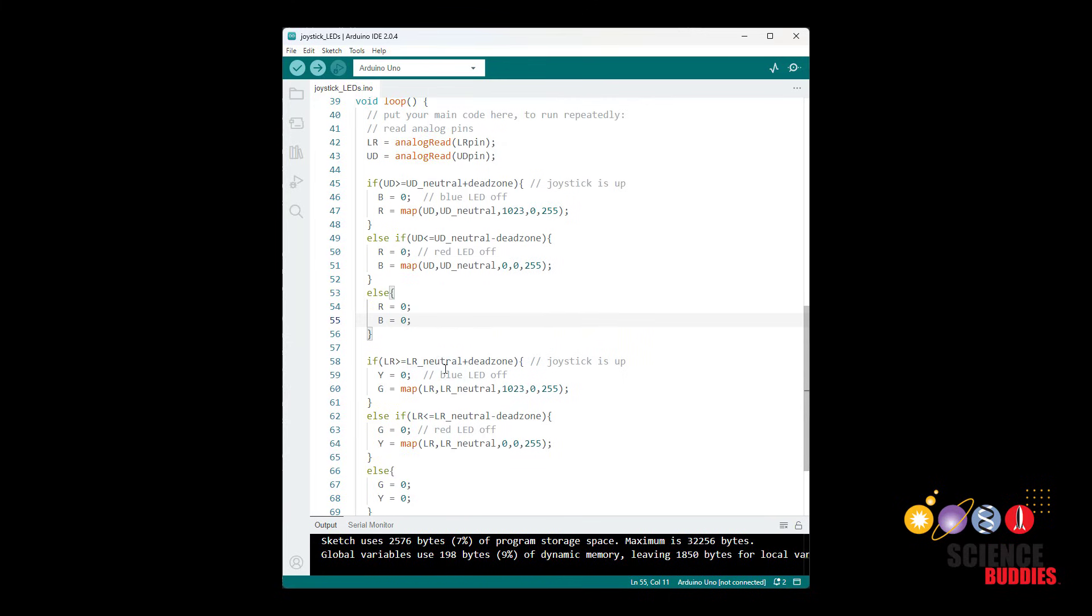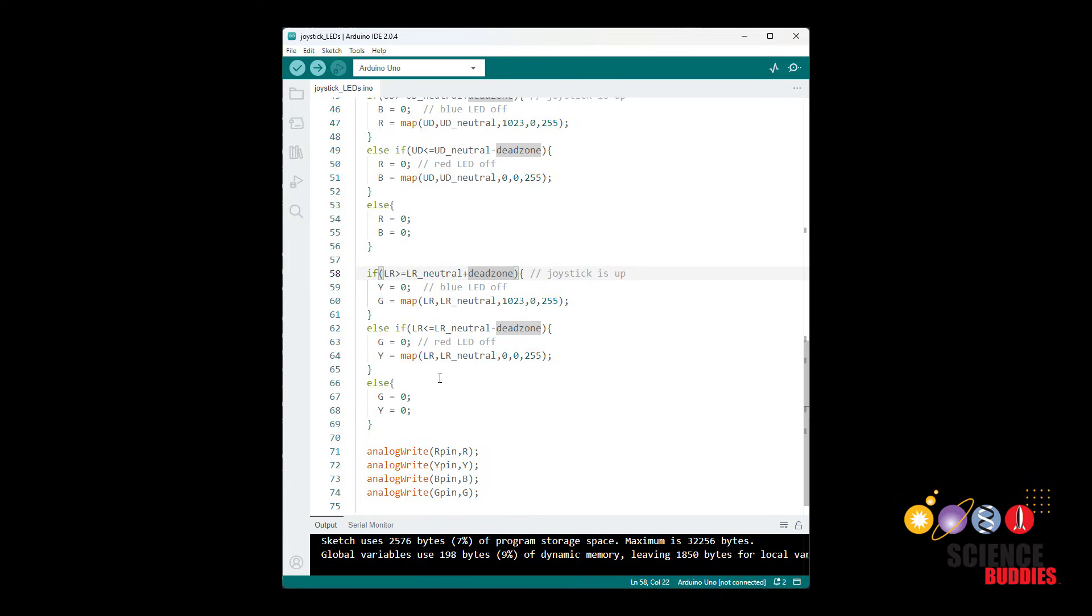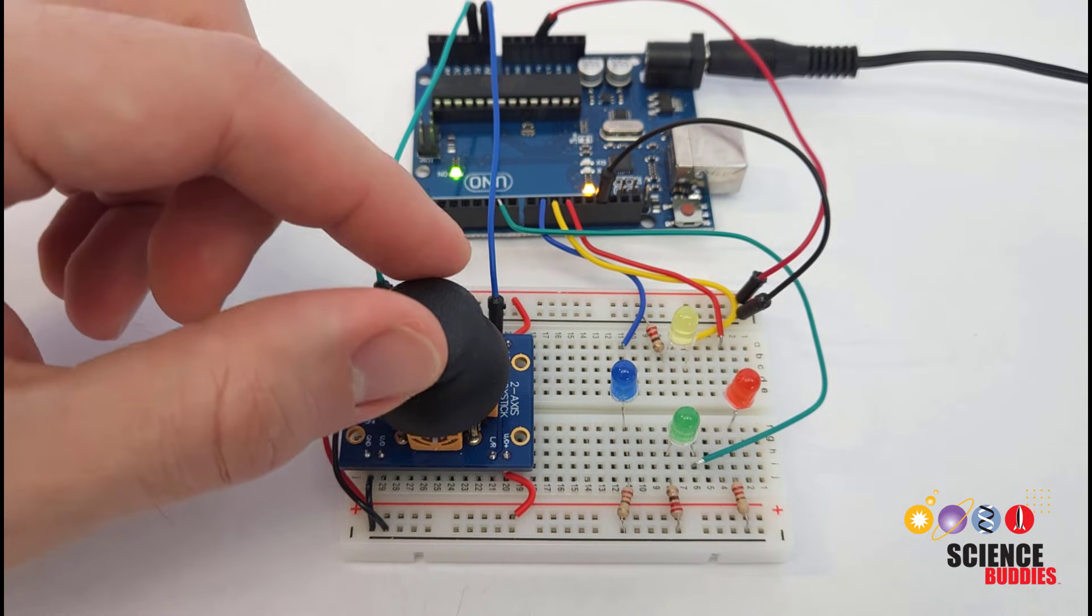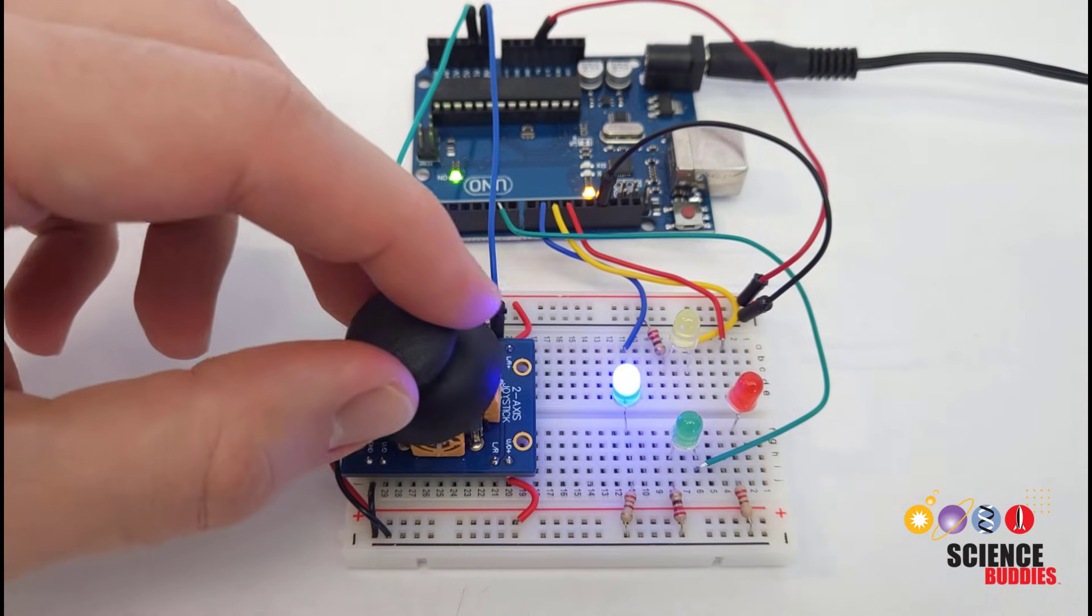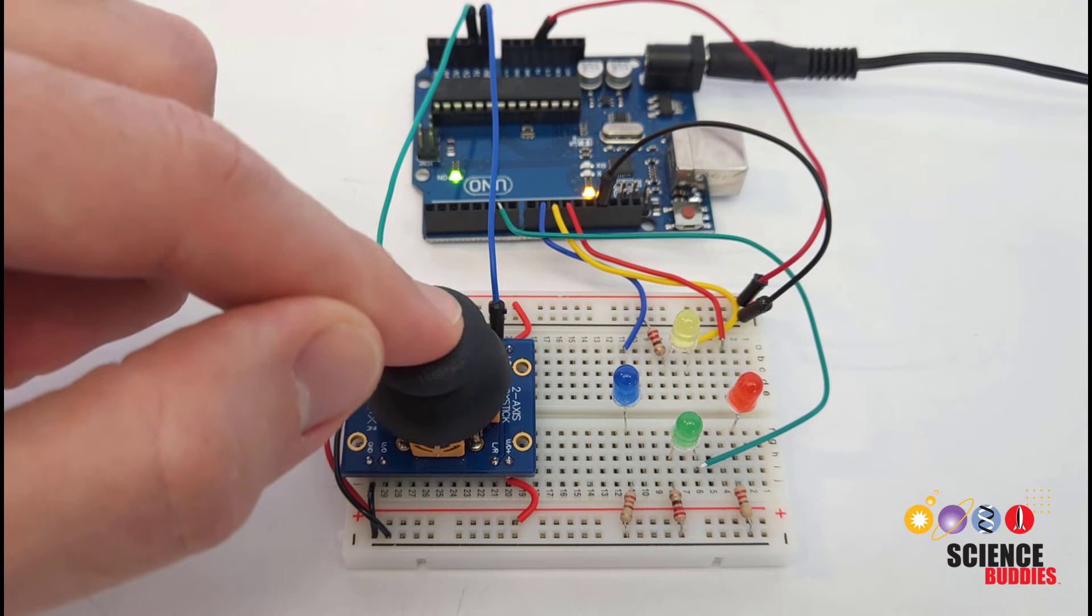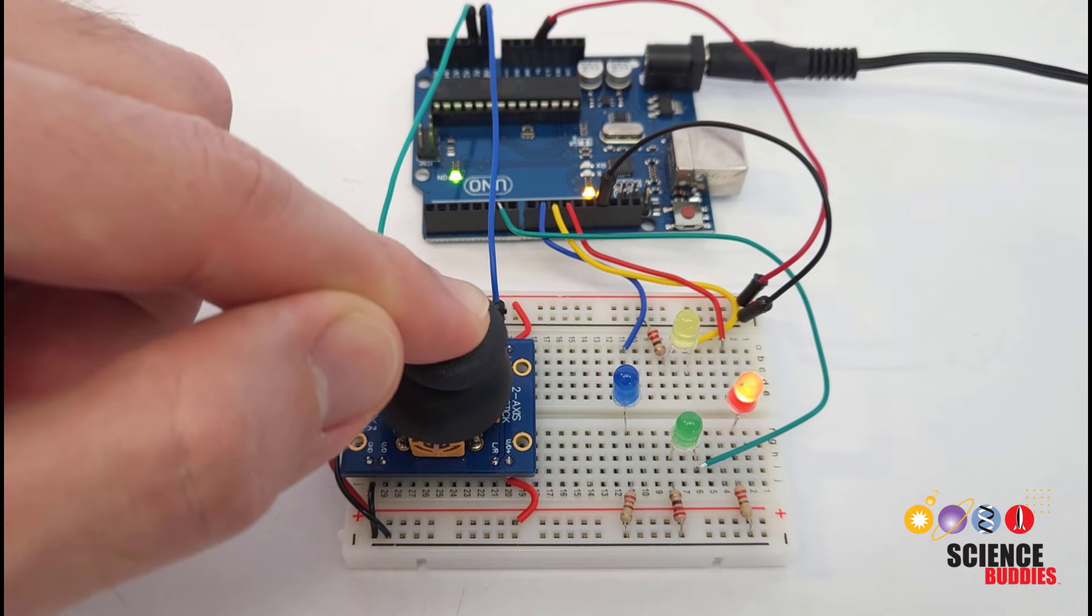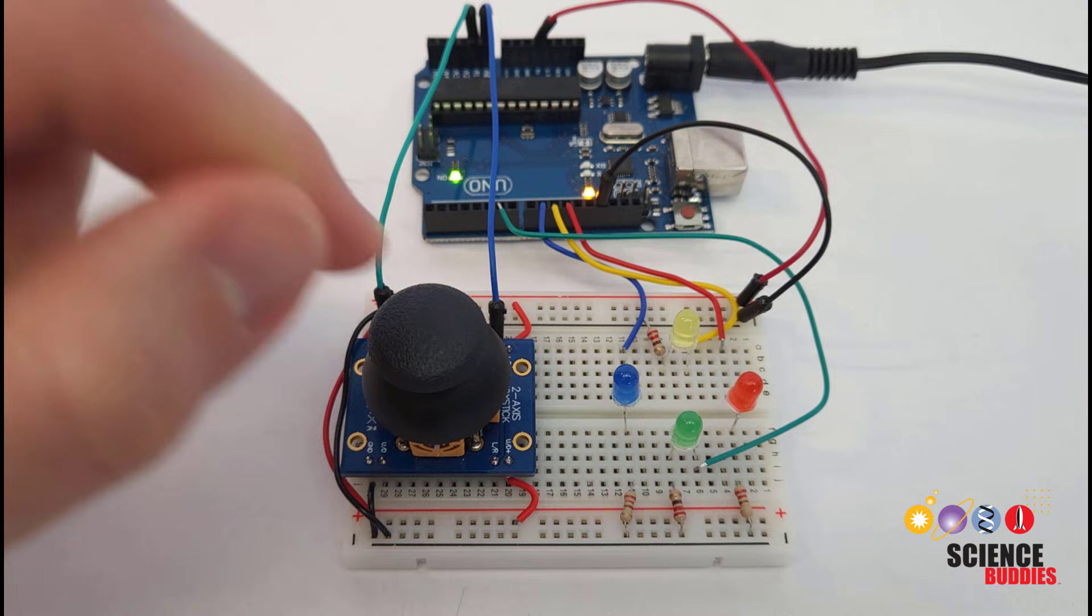And I've done the same thing for the left right value here if for some reason you wanted to have different size dead zones for the left right and up down values you could call these two different variables and then you could have different size dead zones for the two directions. If we switch back over to the camera here and see this running you see now when I let go of the joystick and it bounces back to the middle the LEDs will stay off even though physically it is probably not perfectly centered that dead zone gives me a little bit of wiggle room here so I need to push just a little bit farther before the LEDs will start to turn on and then again if I was controlling motors I would not have to worry about drift when I let go of the joystick.